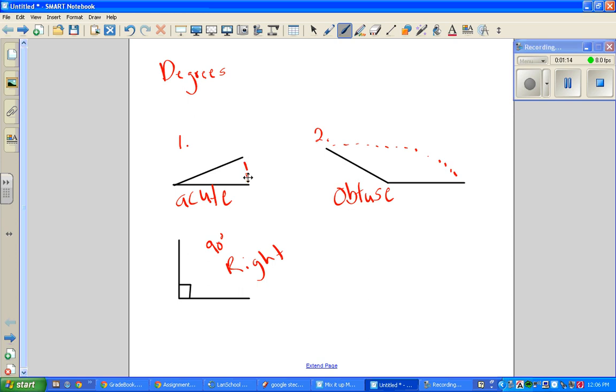When we have an acute angle, the degrees are going to be very low. It will probably be anywhere from 0 to 90. Then, once we hit 90, we have our right angle, which can only be 90.